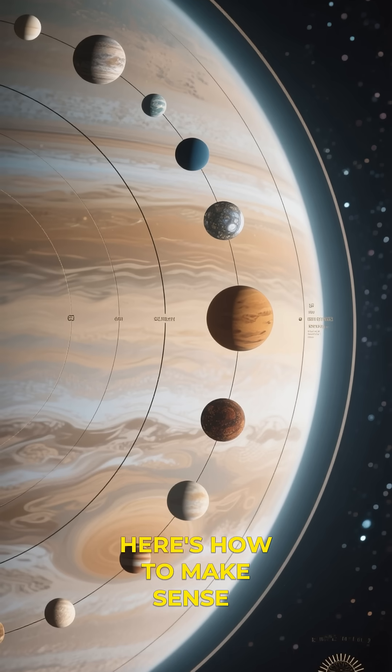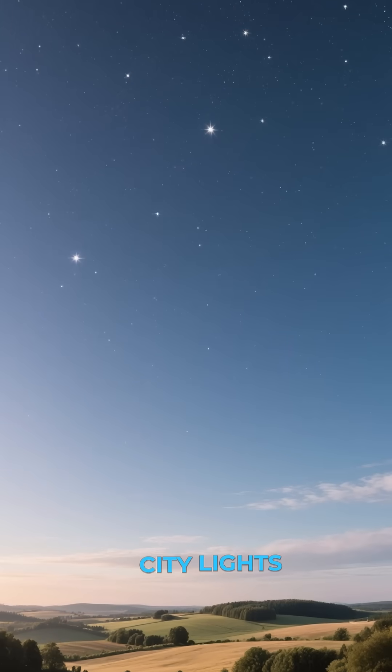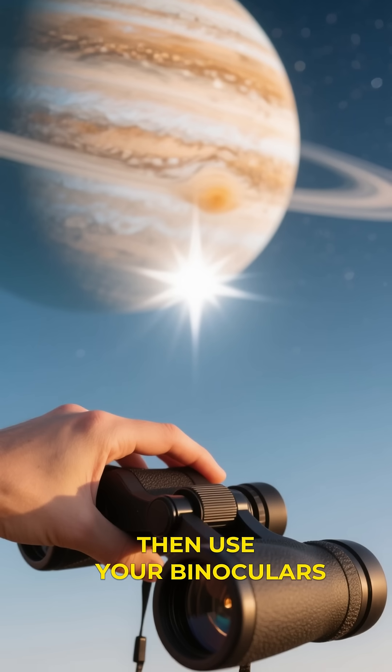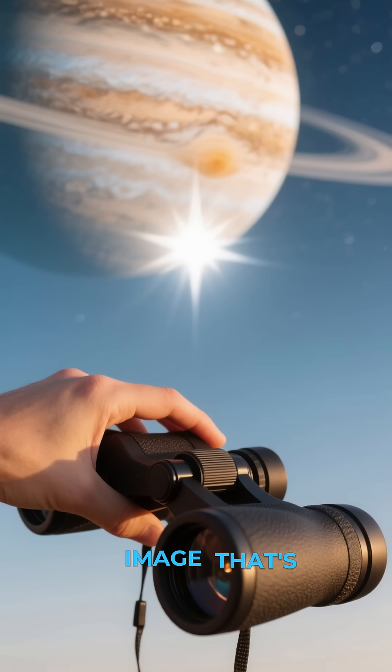Here's how to make sense of this cosmic chaos. First, find a dark sky away from city lights. Then use your binoculars to look at the bright star-like object in the center of this image. That's Jupiter.